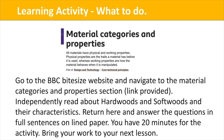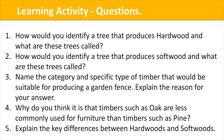For your learning activity, go to the BBC Bitesize website and navigate to the material categories and properties section — the link is provided in the online area. Independently read about hardwoods and softwoods and their different characteristics, then return and answer the following questions in full sentences on lined paper. You have 20 minutes: How would you identify a tree that produces hardwood, and what are these trees called? How would you identify a tree that produces softwood? Name the category and specific type of timber suitable for a garden fence and explain your answer. Why is oak less commonly used for furniture than pine? Explain the key differences between hardwoods and softwoods.